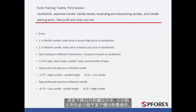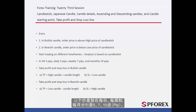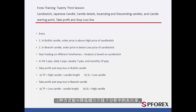In bearish candlesticks, the sell order price must be lower than the low price of the given candlestick. It is recommended that traders place their initial orders 3 pips away from candles in the H4 timeframe. This gap for daily, weekly, and monthly timeframes would be 5, 7, and 10 pips respectively. This method reduces the failure of technical analysis based on a candlestick.